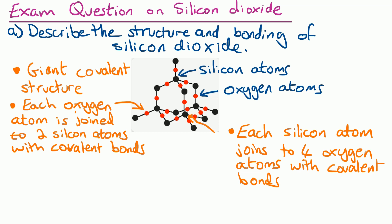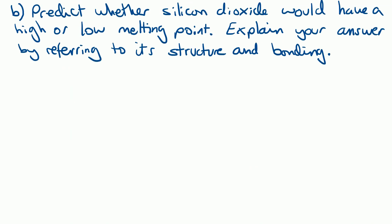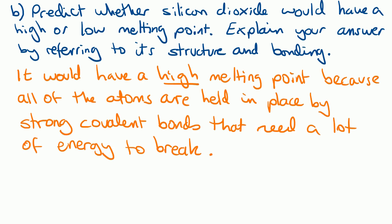Part B asks us to predict whether silicon dioxide would have a high or low melting point and explain your answer by referring to its structure and bonding — remembering it looks quite similar to diamond. It would have a high melting point because all of the atoms are held in place by strong covalent bonds that need a lot of energy to break. Notice how every time we mention covalent bonds, we put in the word 'strong' in front to get an extra mark. The marks here would be: one for saying high melting point, one for saying strong bonds, one for saying covalent bonds, and one for saying they need a lot of energy to break those bonds.